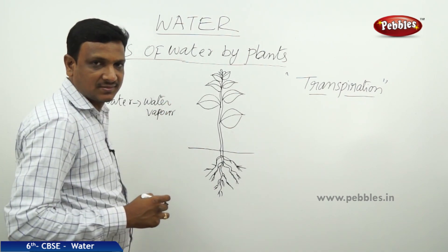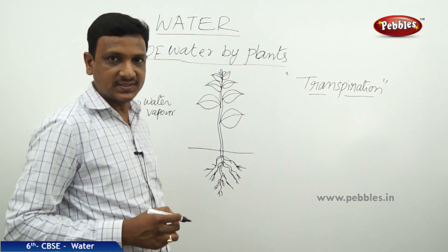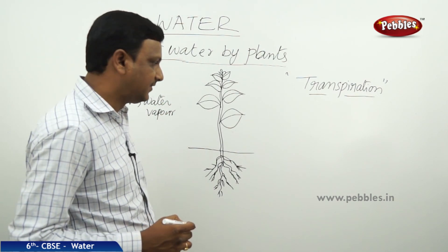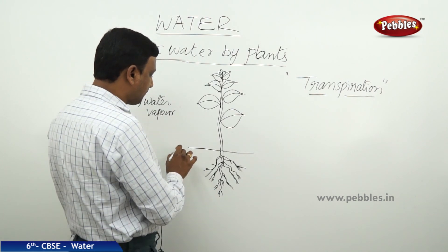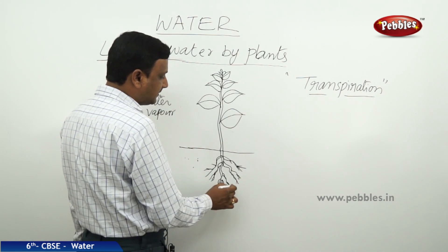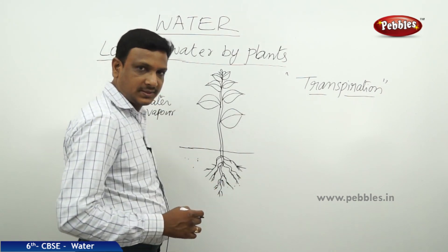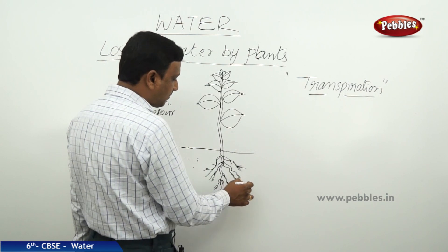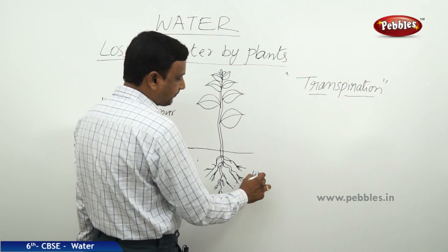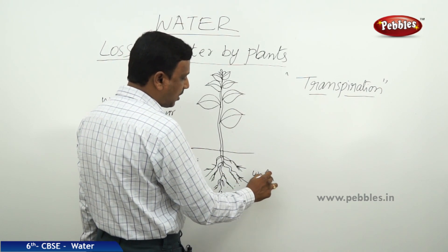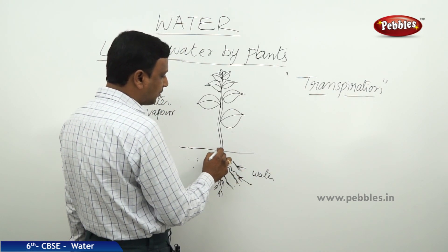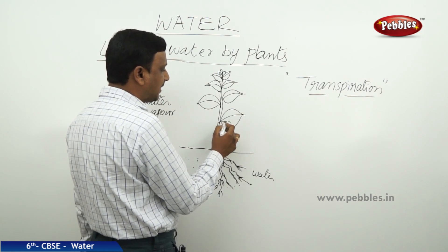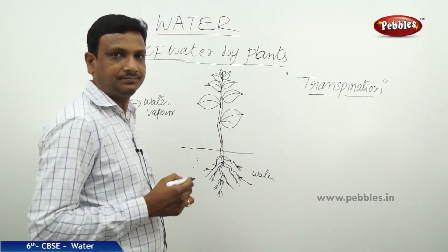Why do they do this? How do they do this? Plants are fixed to the soil. The soil contains water. The water is absorbed by the roots. The water is taken by the roots to the stem and supplied to the leaves and other parts.